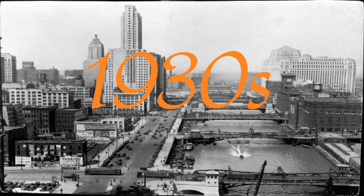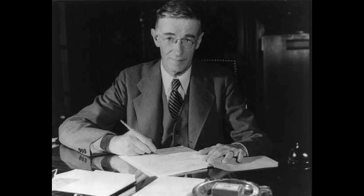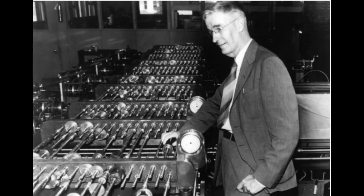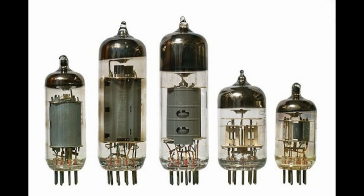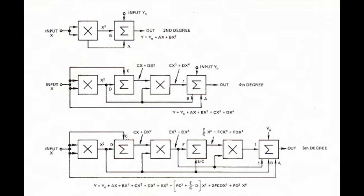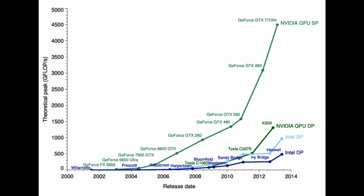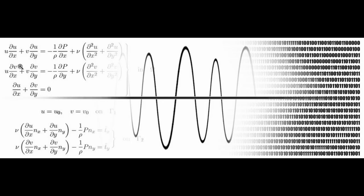Fast forward to the 1930s: the first electronic computer, the Differential Analyzer, was created by Vannevar Bush. It was an analog device that had vacuum tubes to switch electrical signals and perform calculations at 25 calculations every few minutes. While 25 calculations per few minutes sounds slow by today's standards, back then it was an improvement that broke barriers for the world of computers.